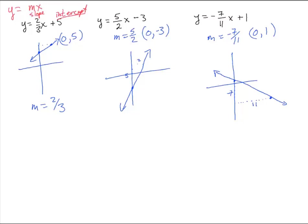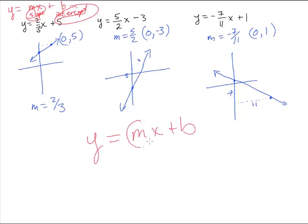When we have it with y by itself, this is called slope-intercept form of a line: y equals mx plus b. It's so nice because the slope, when y is by itself, is right in front of x, and b is right there as the y-intercept.